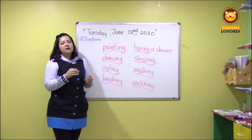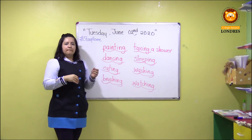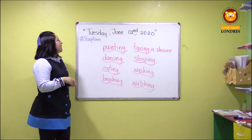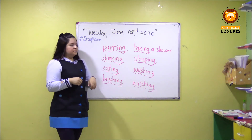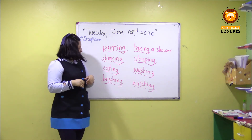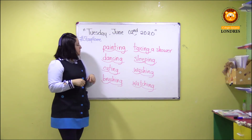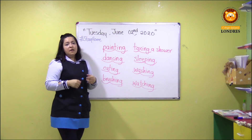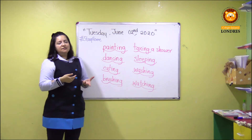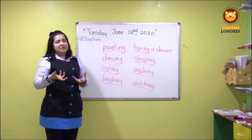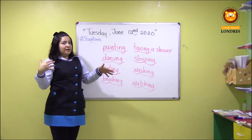Ok, that is... Primero iniciamos. ¿Ya lo recordaron? Vale, tenemos: painting, dancing, eating, brushing, taking, sleeping, washing, watching. That's right. Ustedes pueden practicar así. Si ustedes le dan un ritmo a las palabras, puede ser más sencillo para que las aprendan, para que las memoricen y todo puede ser más práctico.